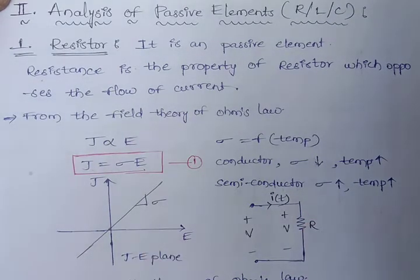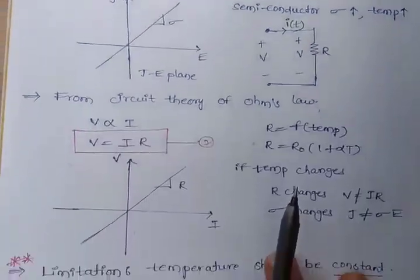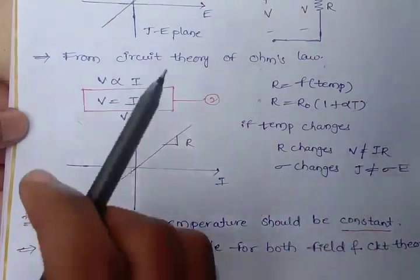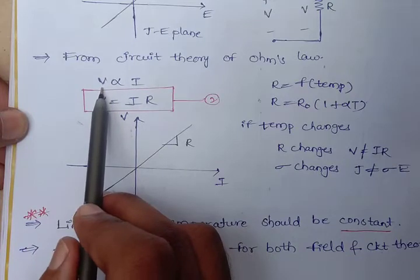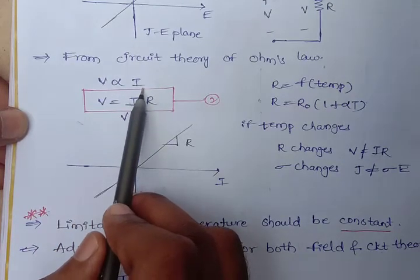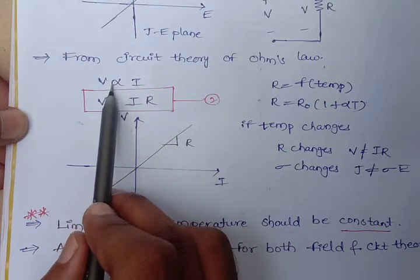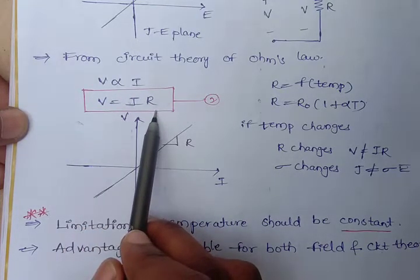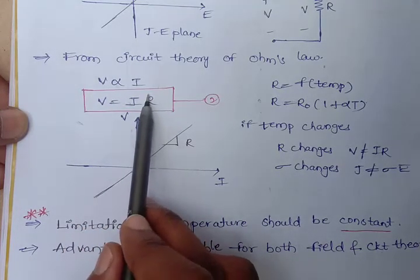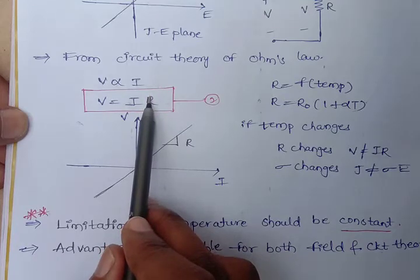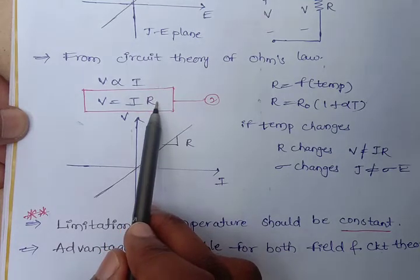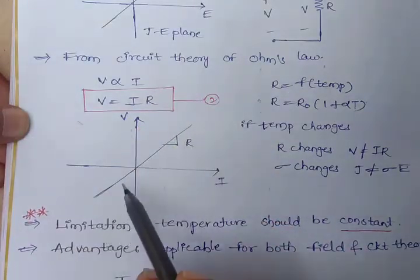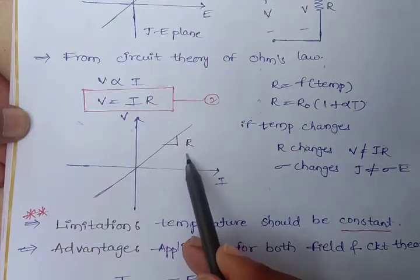Now, come to the circuit theory of Ohm's law. By the circuit theory of Ohm's law, voltage is directly proportional to current. If we replace the proportionality constant, we get V is equal to IR. Here R is the proportionality constant, also called resistance. If we plot this graph, we get a straight line passing through the origin with slope R.